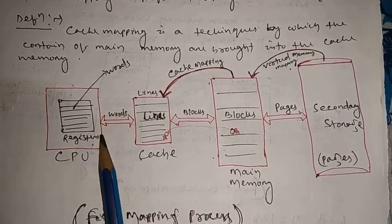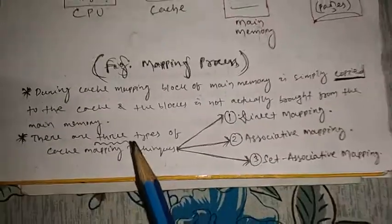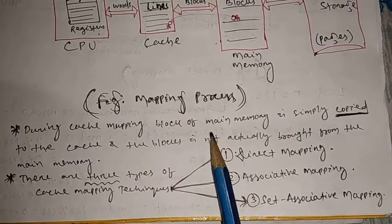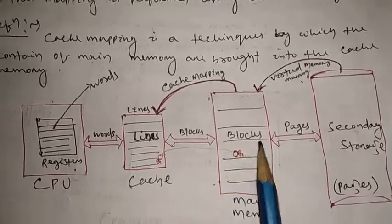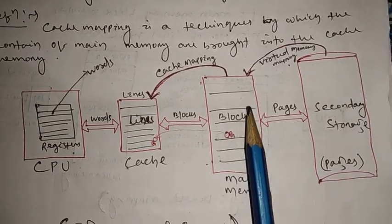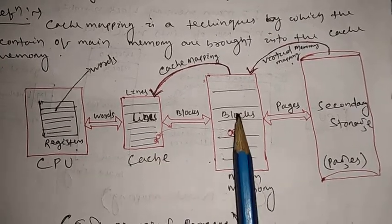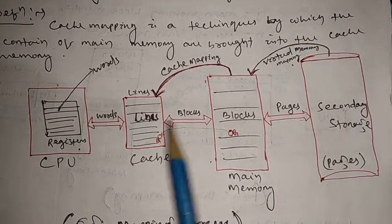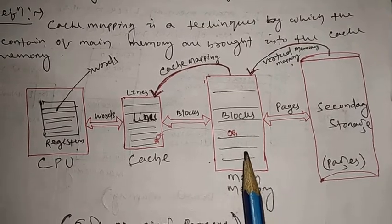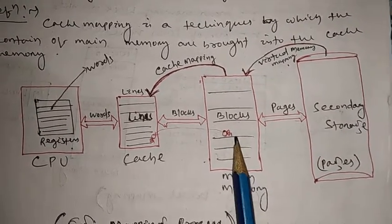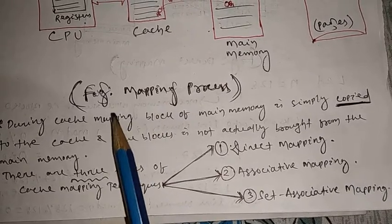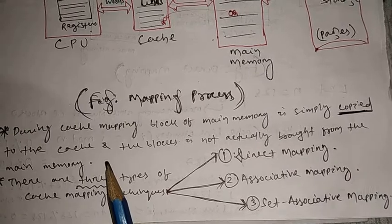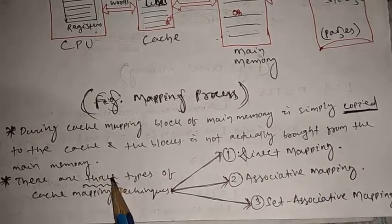During cache mapping, a block of main memory is simply copied to the cache — it is not actually brought or removed from main memory. For example, if block B1 is assigned to cache, that means a copy of B1 is passed to cache memory — B1 still remains in main memory. During cache mapping, block of main memory is simply copied to cache memory; only a copy is made, not the original block.